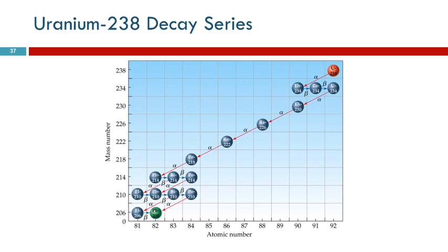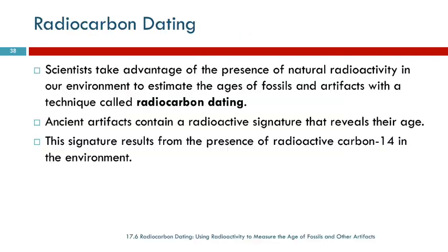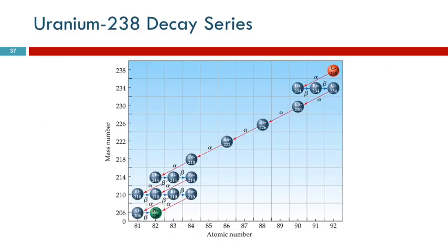This is a graph that represents what's going on when uranium-238 decays. On this y-axis, we have the mass number — so high mass number, low mass number. And here is the atomic number, which gives us the number of protons, and that tells us which element it is.